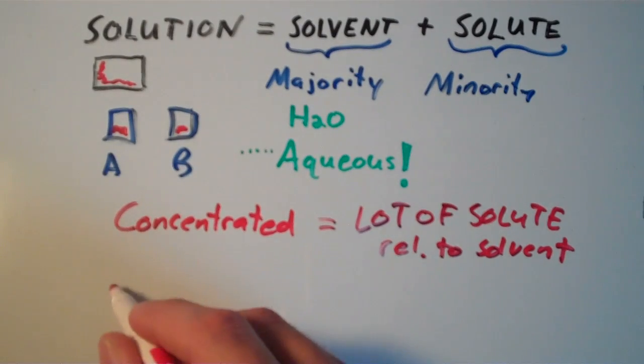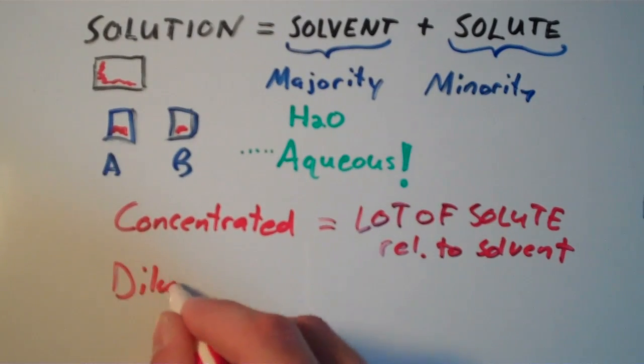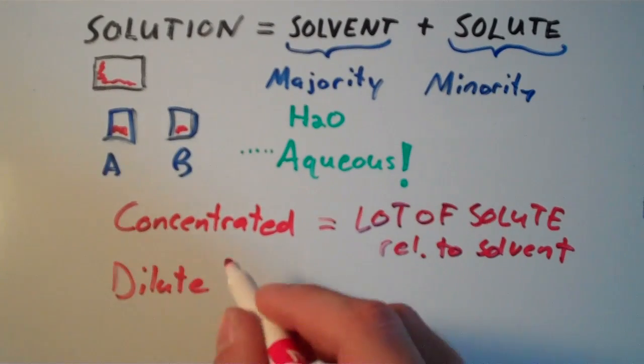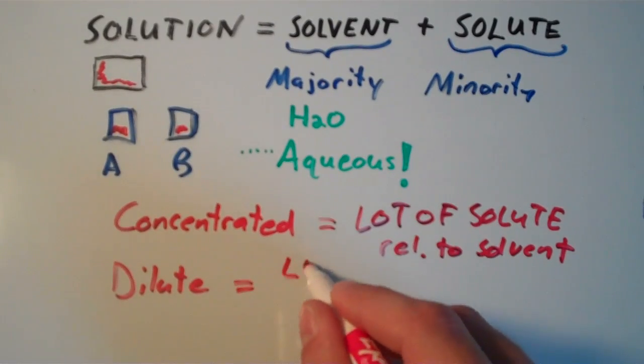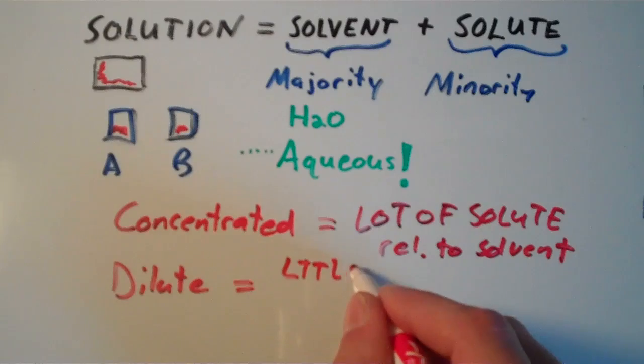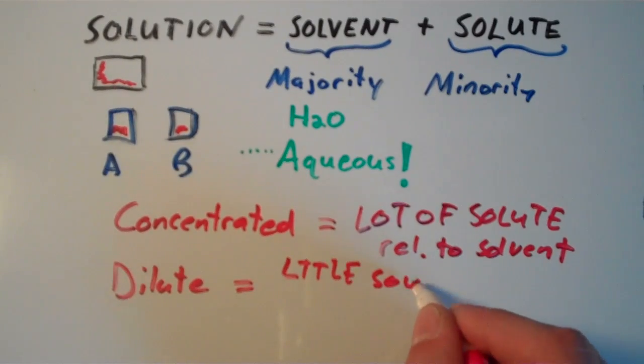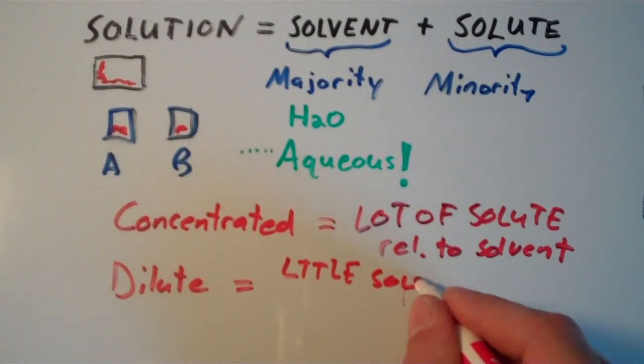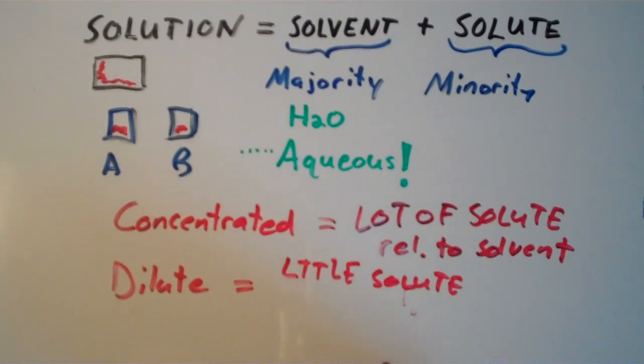On the other hand, we have the term dilute. And if a solution is dilute, that means we have little solute, a little bit of solute relative to your solvent. So these two terms are relative to one another, but they're not absolute. And in chemistry, we like to have absolute things.